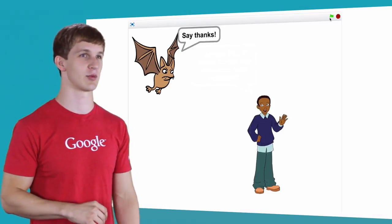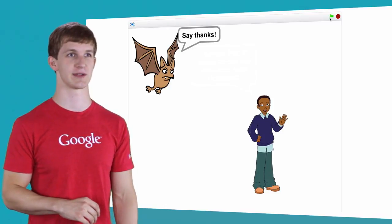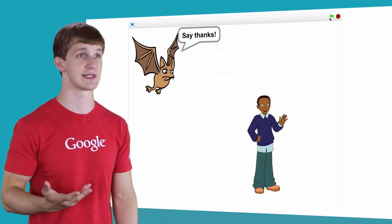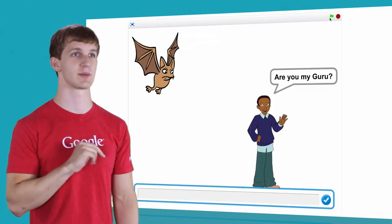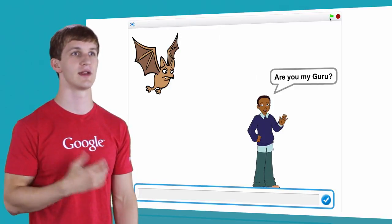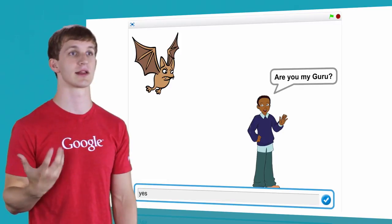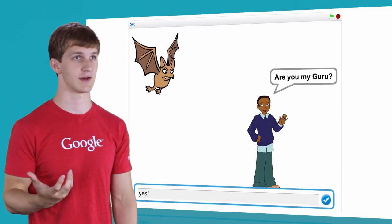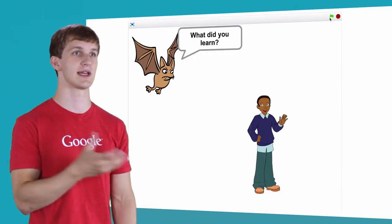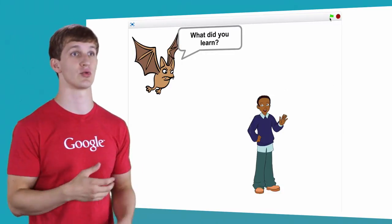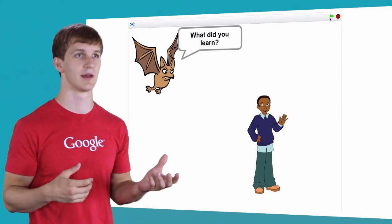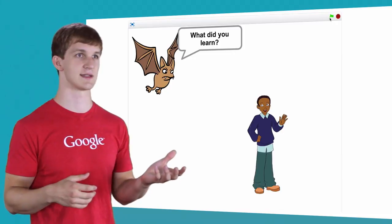Take a look at this example reflection project. As you can see, it's got two sprites. One is a narrator, like the one you used in day five, who is broadcasting messages to the other sprite.